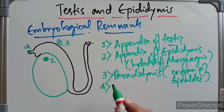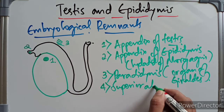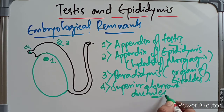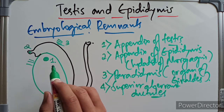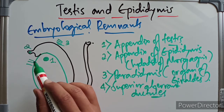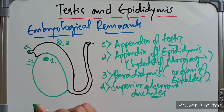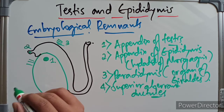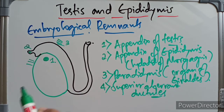The fourth remnant is the superior aberrant ductules. They are two or three in number and are attached to the upper end of the testis. They are remnants of the upper mesonephric tubules.